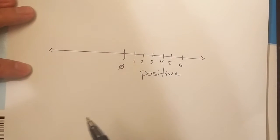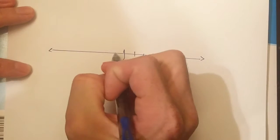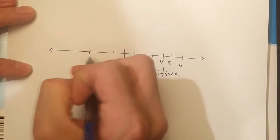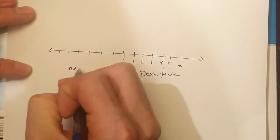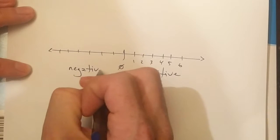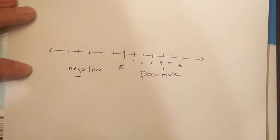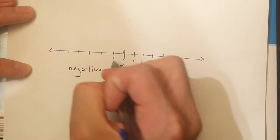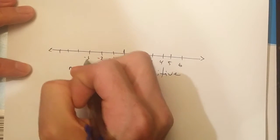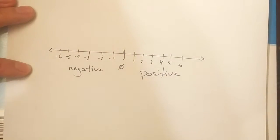I can do the same thing but in the opposite direction — to the left. As I go to the left: one, two, three, four, five, six. These are my negative numbers. So to the left of the number line, or less than zero, are my negative numbers, symbolized as negative one, negative two, negative three, negative four, negative five, and negative six.